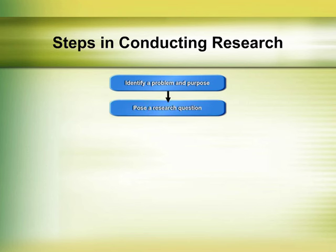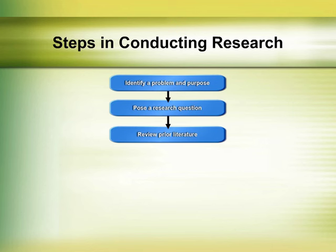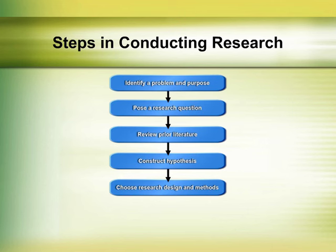Next, the researcher establishes the purpose of the study — why you want to do the study and what you intend to accomplish. This is followed by research questions, which help to focus the study. Once the study is focused, the researcher needs to review both seminal works and current peer-reviewed primary sources. Based on the research question and on a review of prior research, a hypothesis is created that predicts the relationship between the study's variables. Next, the researcher chooses a study design and method to test the hypothesis. These choices should be informed by a review of methodological approaches used to address similar questions in prior research.